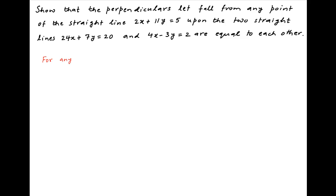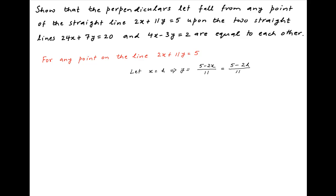Let's start by determining any general point on the given line 2x plus 11y minus 5 is equal to 0. Let x equal h. Therefore, from the equation of the line, y is equal to 5 minus 2x upon 11, which is equal to 5 minus 2h upon 11. Therefore, the coordinates of any general point on this line are h, 5 minus 2h upon 11.